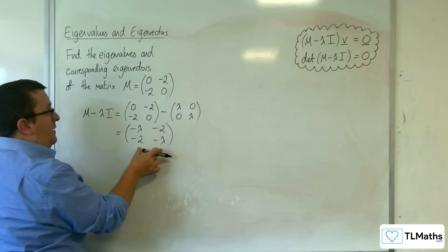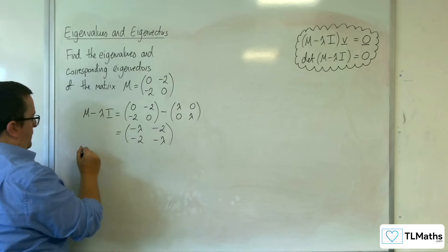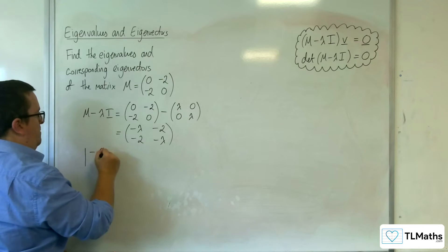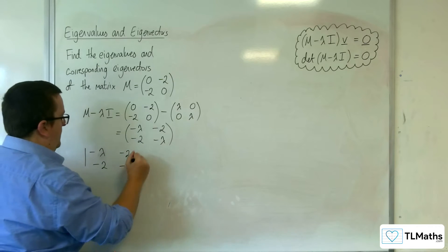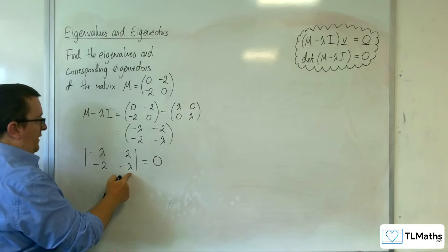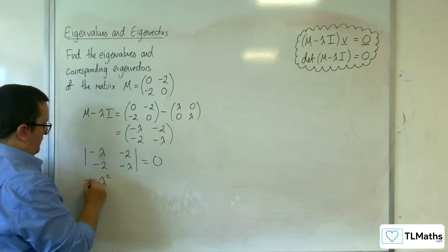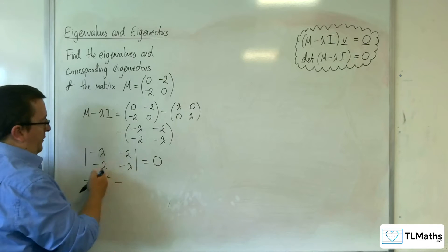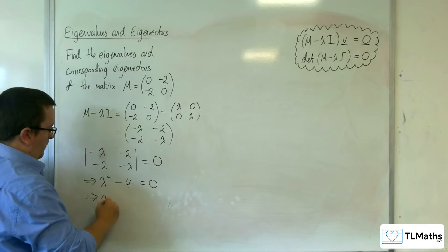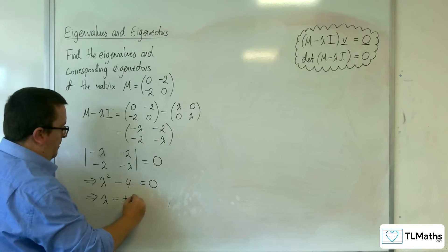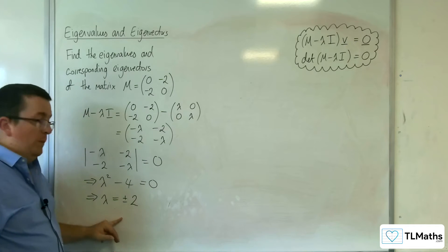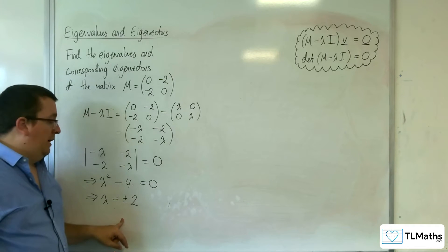Now we need the determinant of that to be equal to zero. So: det(−λ, −2, −2, −λ) = 0. That gives minus lambda times minus lambda, which is lambda squared, take away minus 2 times minus 2, so minus 4 equals zero. So that implies lambda must be equal to plus or minus 2. These are our two eigenvalues.